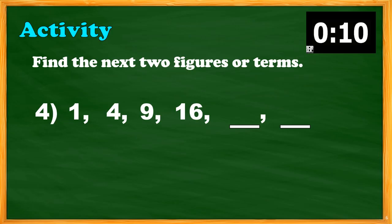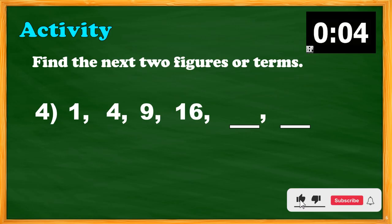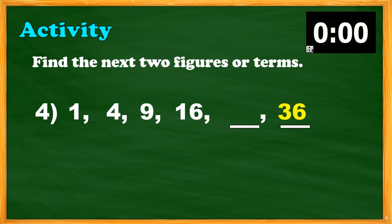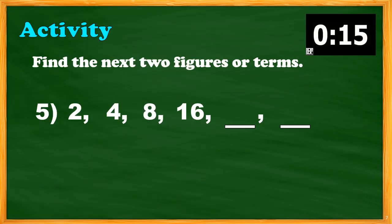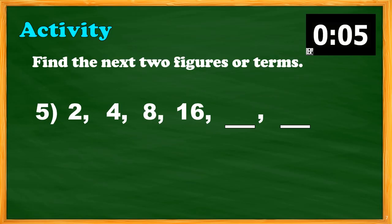Next, number four: 1, 4, 9, 16 — what do you think happens to the next preceding number in order to find the next two terms? The answer must be 25 and 36. Number five: what do you think is the next two terms? 2, 4, 8, 16, blank, blank — the answer is 32 and 64.